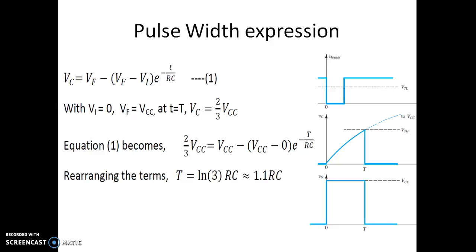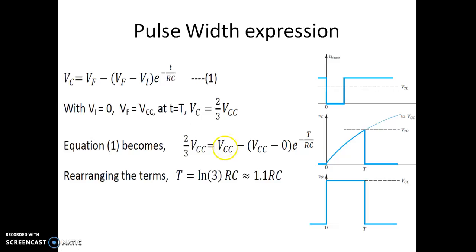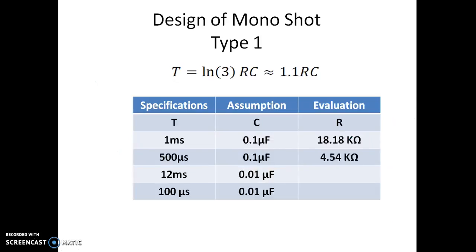So the pulse width T = 1.1 × R × C. The width depends purely on the values of R and C. The trigger only initiates the process; it has no control over the output width. The factor 1.1 arises because the capacitor charges to (2/3)VCC with a final voltage of VCC. Importantly, regardless of whether VCC is 5V, 10V, or 15V, the time T remains constant — it is exactly 1.1 × R × C.